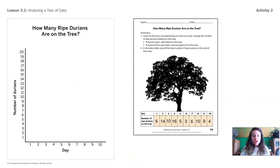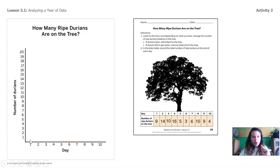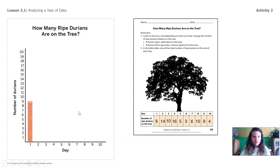All right, let's start with day 1. Tell me how many durians I need to mark on the bar graph for day 1. Yes, we need to mark 9 durians. So we're going to find the x-axis across the bottom, go to day 1, and then go all the way up — 1, 2, 3, 4, 5, 6, 7, 8, 9. We're going to stop at the number of durians for that day and then draw a little bar to represent how many durians are there.